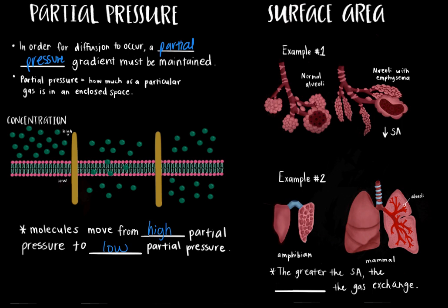In the case of emphysema, when the alveolar walls are damaged, there is a reduction in the amount of gas exchange at the lungs. As we can see in this picture, the alveoli on the right are flatter and more constricted compared to the normal alveoli on the left, which are rounder and more spacious. This is because of the buildup of non-functional scar tissue around the alveoli. Example two: animals that need more energy have a greater surface area because they need more oxygen to metabolize more nutrients and produce more energy. Mammals have a greater lung surface area than amphibians because they require more energy to carry out their daily functions. Therefore, the greater the surface area, the more efficient the gas exchange.